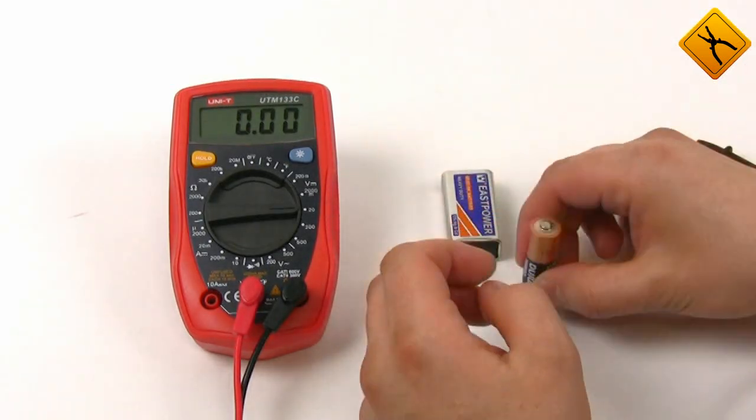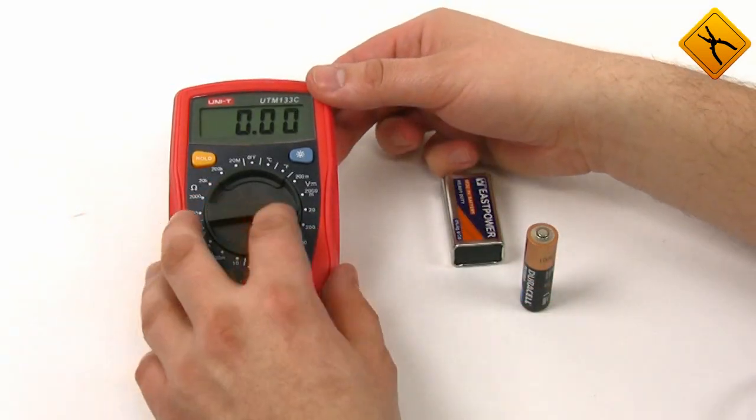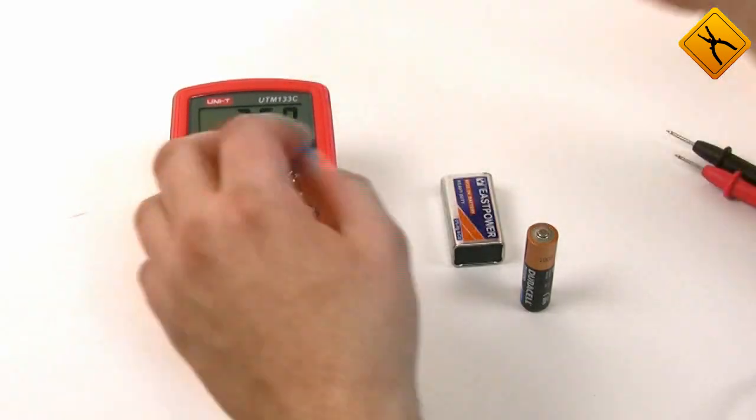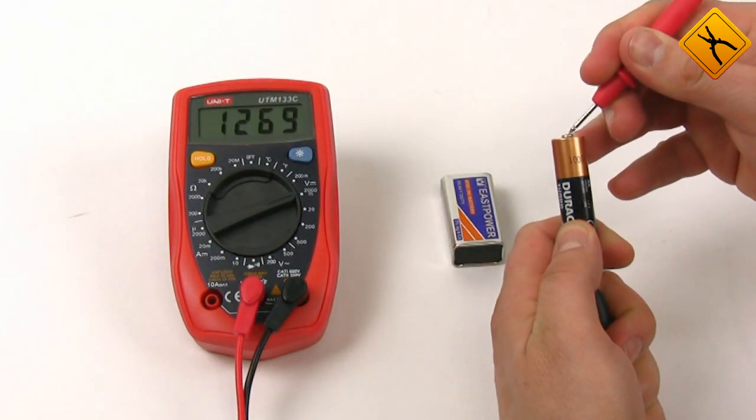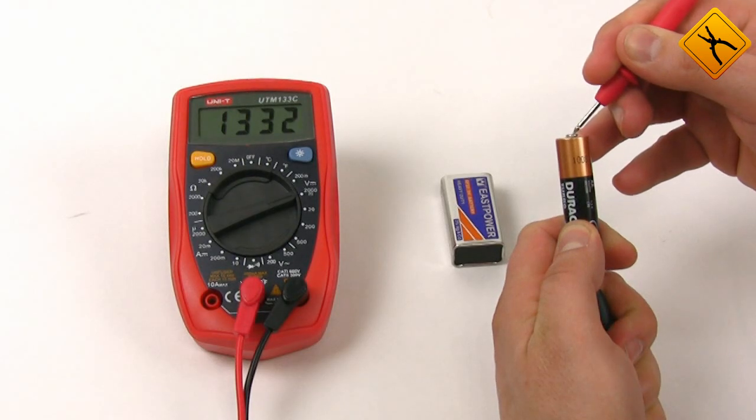For AA battery, turn the rotary switch to 2 volt. The voltage is 1.3 volt. The battery is rather low.